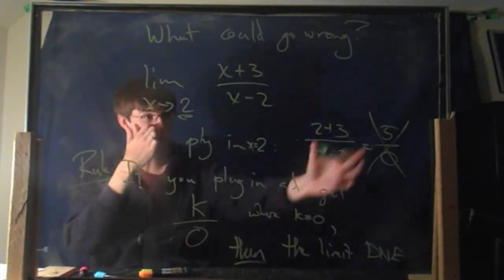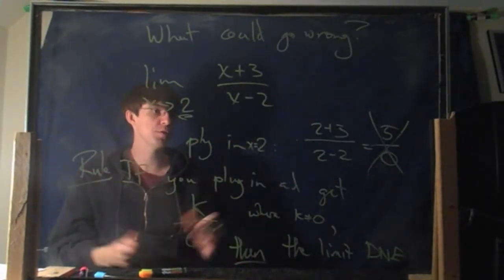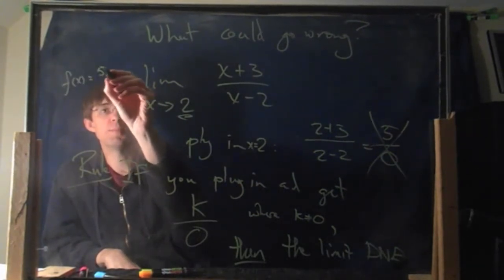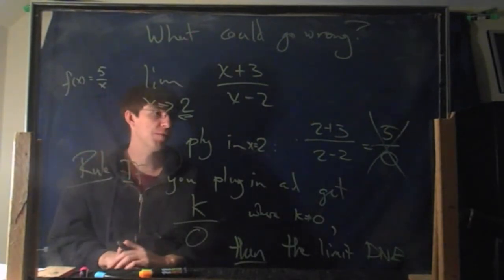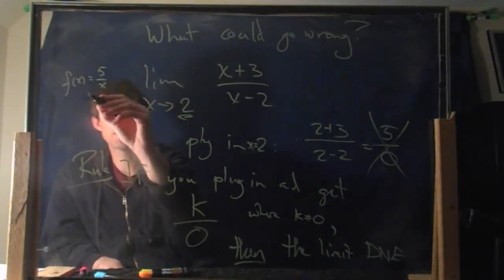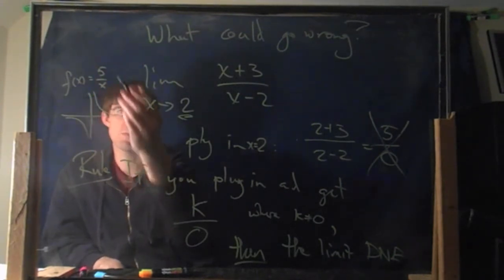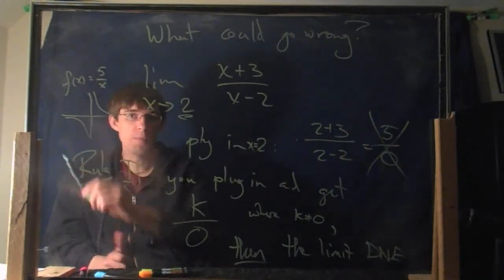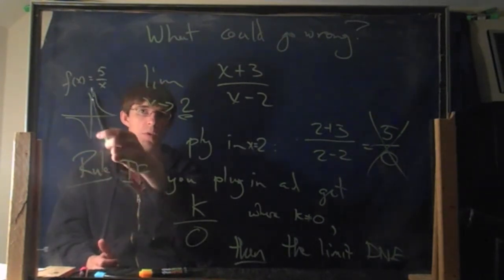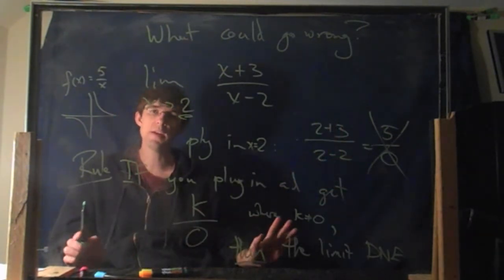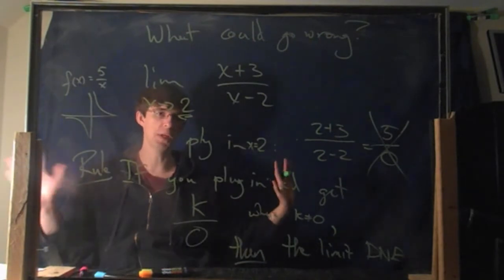That's because when you get something like 5 over 0, your function is behaving near that point like f(x) = 5/x, where you're plugging 0 into the denominator. What does 5 over x look like near 0? It looks just like 1 over x, multiplied by 5. This function has no limit when x is 0. So if you get a 0 on the denominator but something else on top, you just say the limit does not exist.